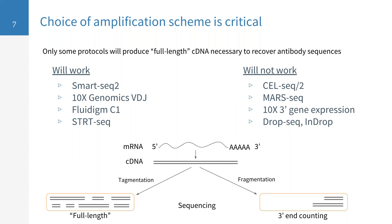Chemistries that will work generate full-length cDNA where small Illumina reads cover the entire length of the transcript, while those that will not work typically fall under a 3-prime end counting chemistry where you're only getting the 3-prime end of these molecules when you sequence.